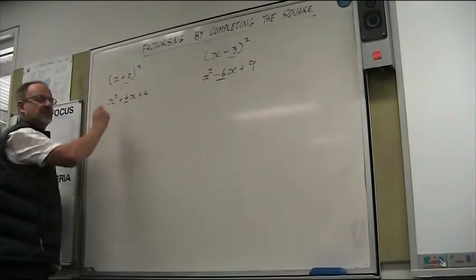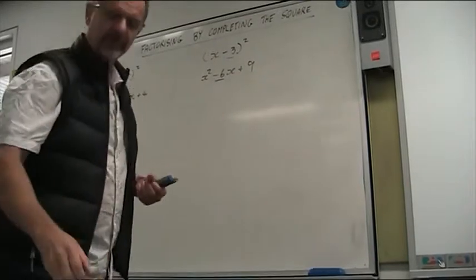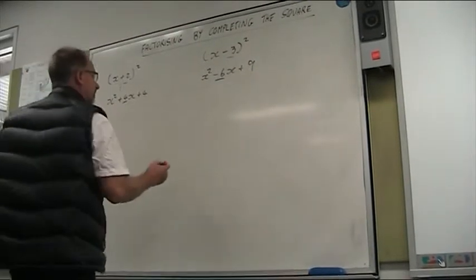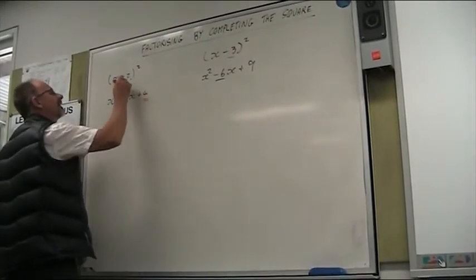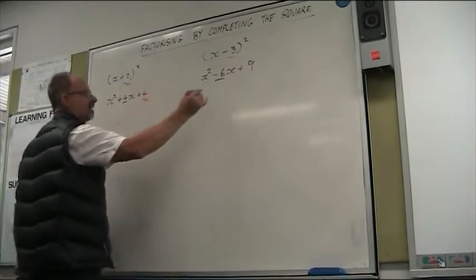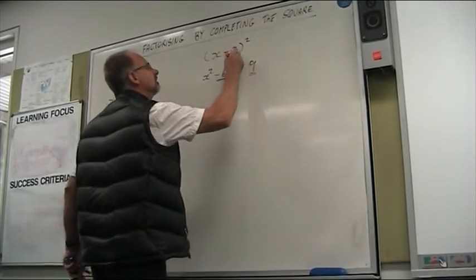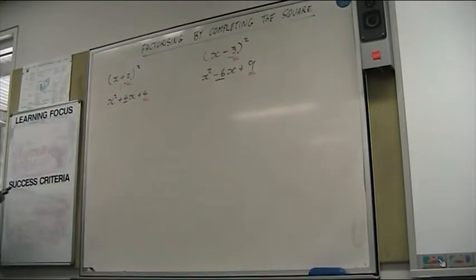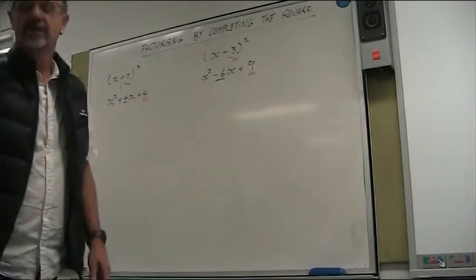They're doubled. That's right, they're doubled. And if you look at the number on the end and the number in the bracket, what do you notice? It gets squared. It gets squared. All right.